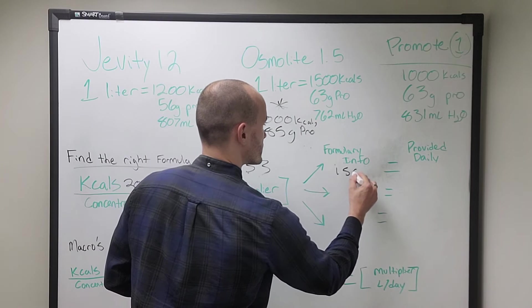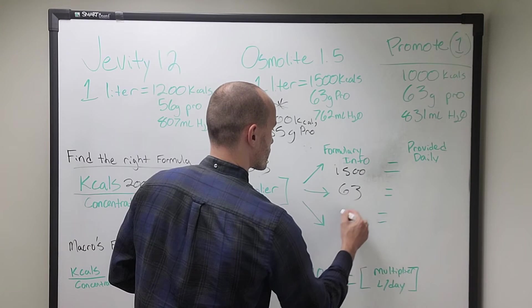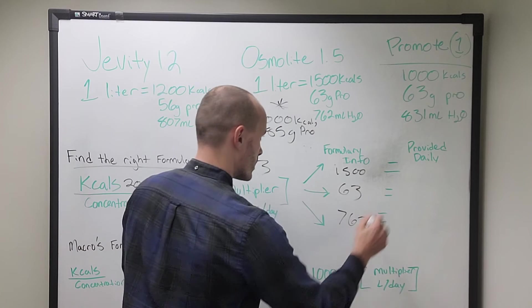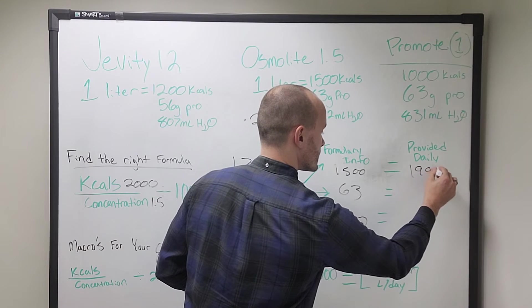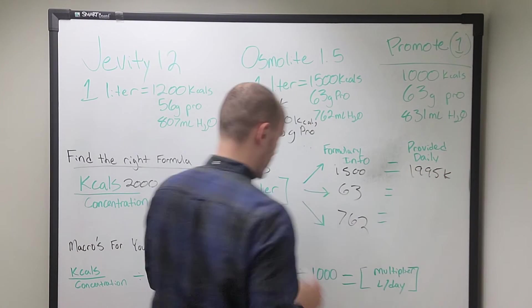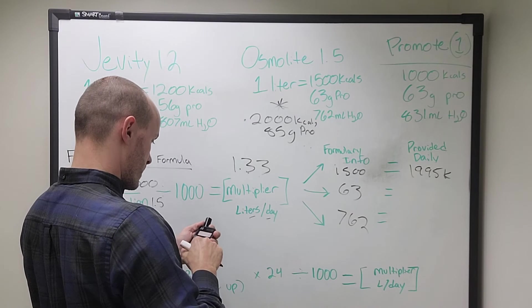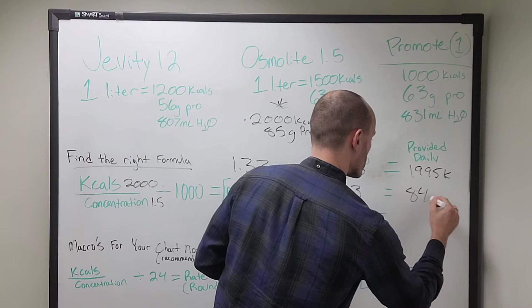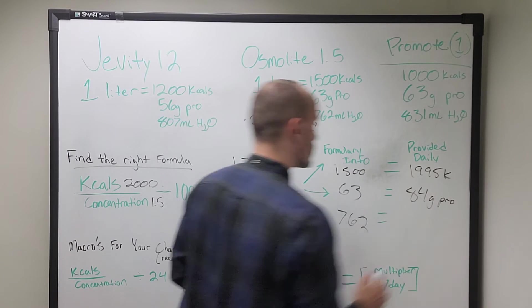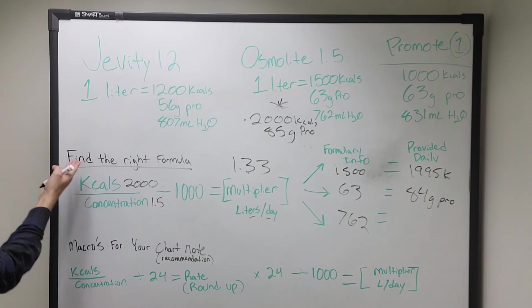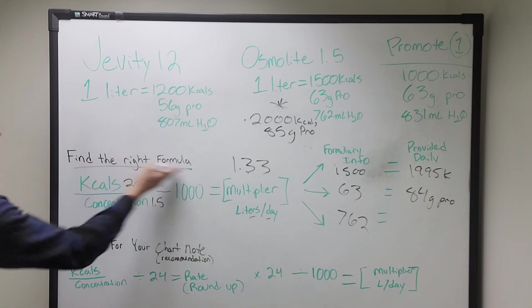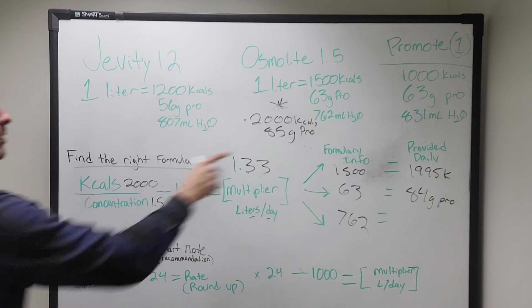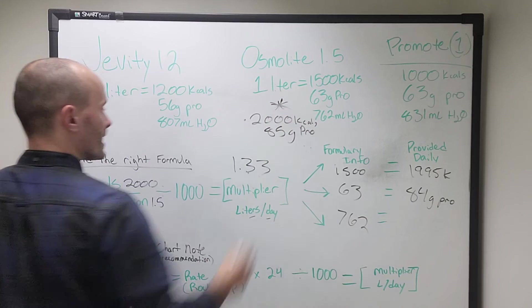And then we pull our numbers down. 1,563 and 762. This is going to give us our 1995 kcals back. And it's going to give us our 84 grams of protein. So this helps us find the right formula. Cool. We're going to use osmolite.